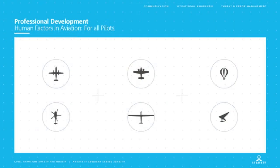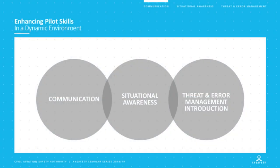The information we're going to give you today is applicable no matter what you fly — an RPT turboprop, an IFR twin, or sport aviation like gliding or parachuting. The human factors concepts we'll explore are applicable all the way across the board. There are three things we're going to look at: communication, because the way we communicate in the air has significant challenges, very different to how we communicate face to face on the ground.